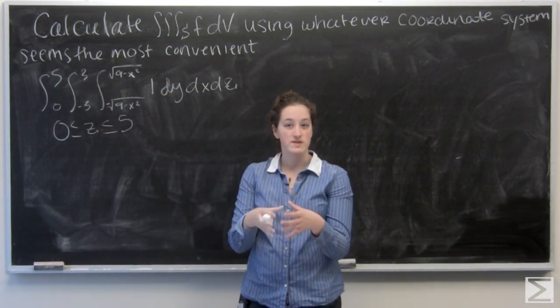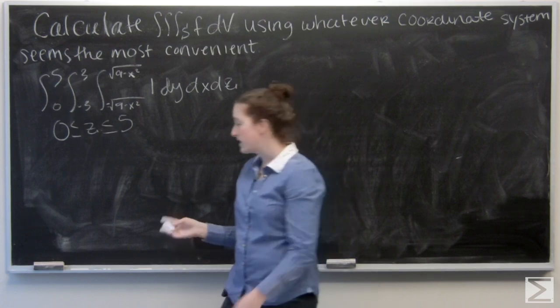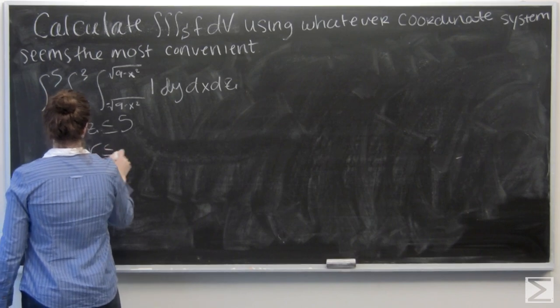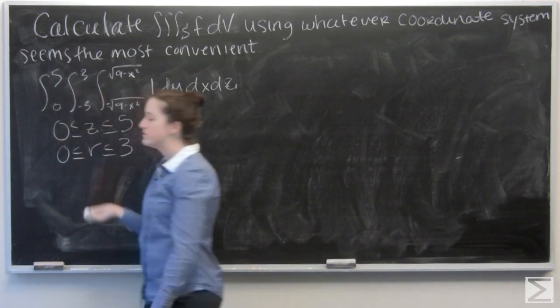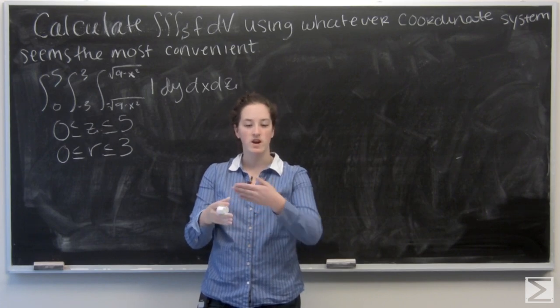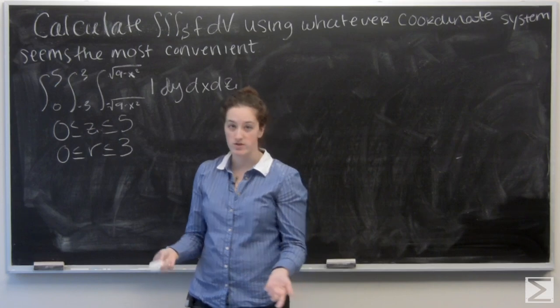We had that circle, that's the base of our cylinder, of radius three. So r goes from zero to three. And then we want to think about theta. So we have a whole circle. That means that our angle goes all the way around. So theta is going to be from zero to two pi.